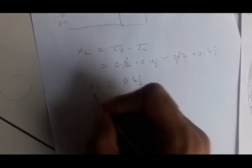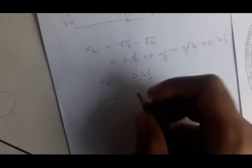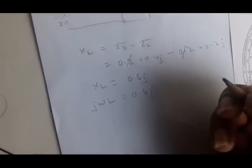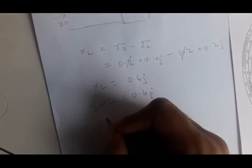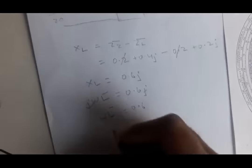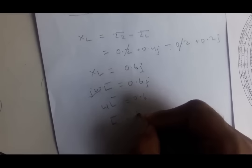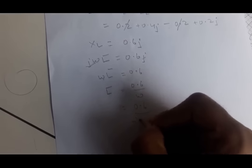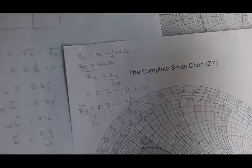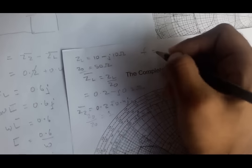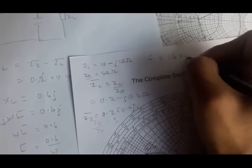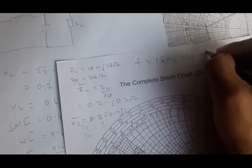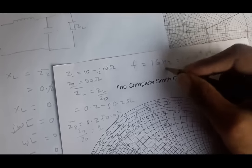Since XL = jωL = j0.6, we get ωL = 0.6, so the normalized inductance L̄ = 0.6 / ω = 0.6 / (2πf). The frequency is given as 1 GHz = 1×10⁹ Hz, so L̄ = 0.6 / (2π × 1×10⁹).